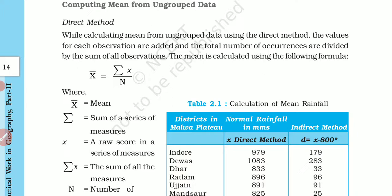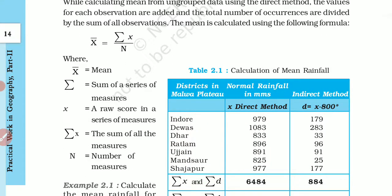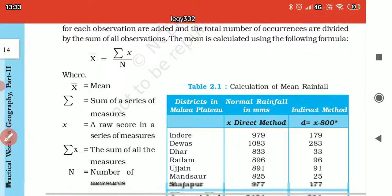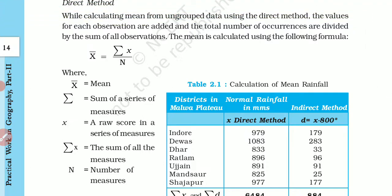Now we will learn about the types of grouped and ungrouped data. To compute ungrouped data we use direct method and indirect method. Ungrouped data means any interval is not available, like 0 to 10 or 10 to 20. To find the mean, the simplest formula is x equals sigma x divided by n. Let's see this table.